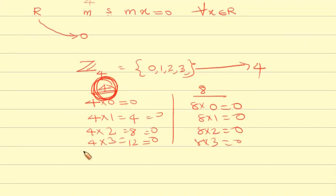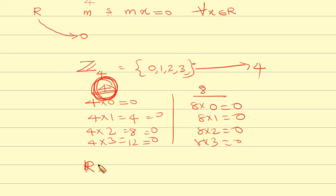For the real numbers R, there is no positive integer m such that m times x equals 0 for all x in R. Therefore the real numbers have characteristic 0. R has characteristic 0. Note that Z4 also has characteristic 0 is incorrect — Z4 has characteristic 4.